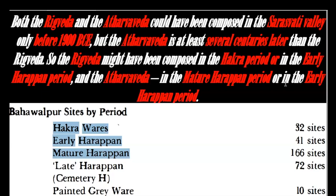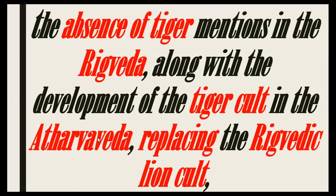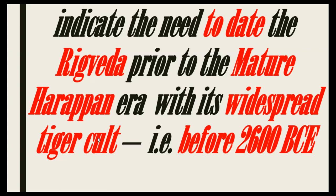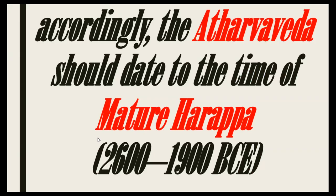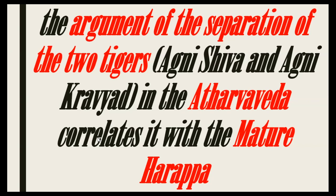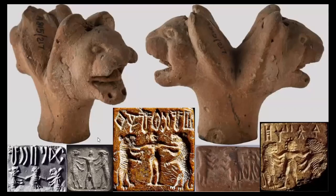The next argument is the absence of tiger mentions in the Rig Veda, along with the development of the tiger cult in the Atharva Veda replacing the Rigvedic lion cult, which indicates the need to date the Rig Veda prior to the Mature Harappan era with its widespread tiger cult connected with royal consecration — that is, before 2600 BC. Accordingly, the Atharva Veda should date to the time of Mature Harappa, 2600 to 1900 BC. The argument of the separation of the two tigers — Agni Shiva and Agni Kravya — in the Atharva Veda also correlates it with Mature Harappa.